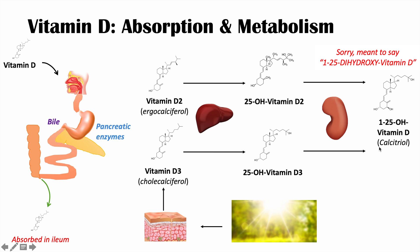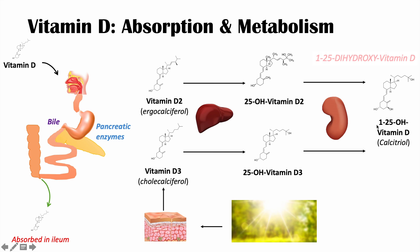This is also known as calcitriol. 'Triol' refers to three hydroxyl groups — we added two and we started with one, so we've actually got three hydroxyl groups total. Calcitriol, three hydroxyl groups, is also known as 1,25-hydroxyvitamin D.